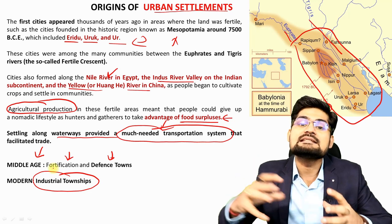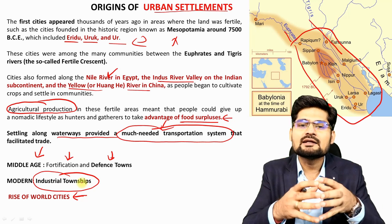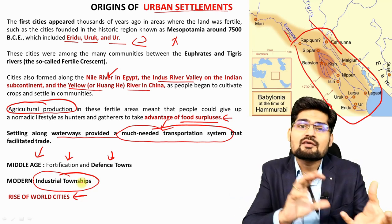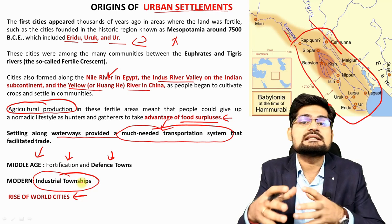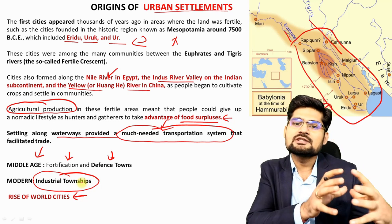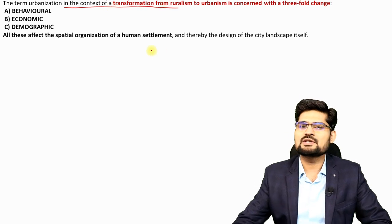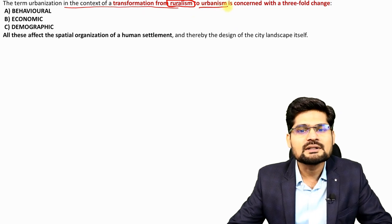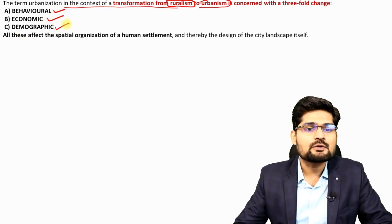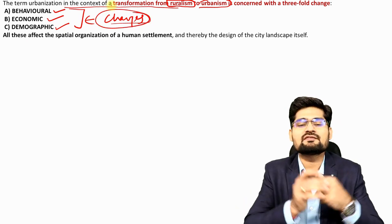In the present, we see the rise of world cities — cities like New York, London, Tokyo, Mumbai, and New Delhi have a world identity. They are interconnected on the basis of information technology, internet networks and transfer of goods and information. Urbanization is essentially a transformation from ruralism to urbanism involving three-fold changes: behavioral changes, economic changes, and demographic changes — leading to different types and classifications of urbanization.